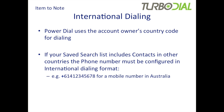A quick note on international dialing: for PowerDial, TurboDial uses the account owner's country code for dialing. If you're in North America, it uses plus 1; if you're in Australia, it uses plus 61. So if your saved search list includes contacts in other countries, the phone numbers in those contact records must be configured with full international dialing format — that's how it will override the country code from the account owner.